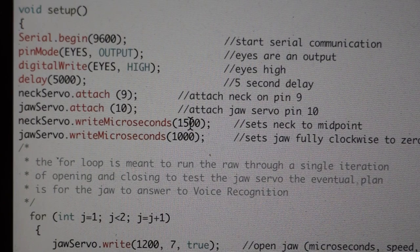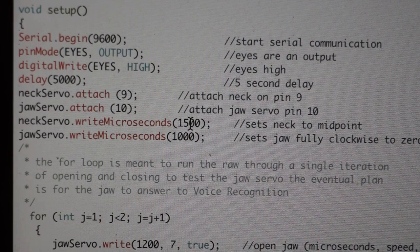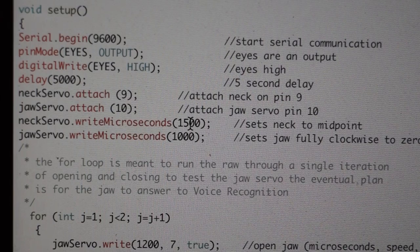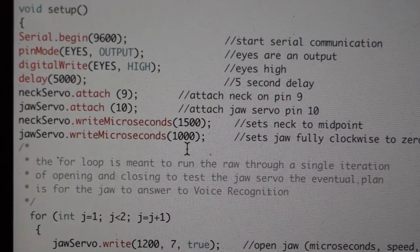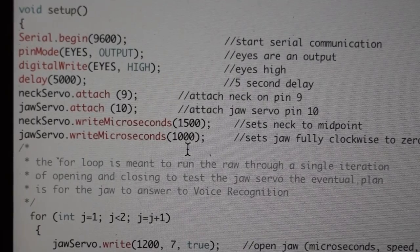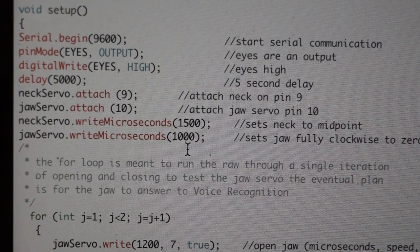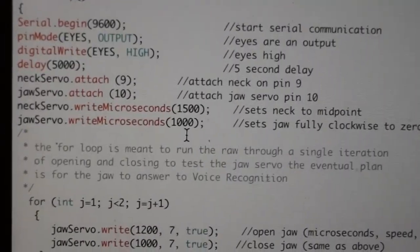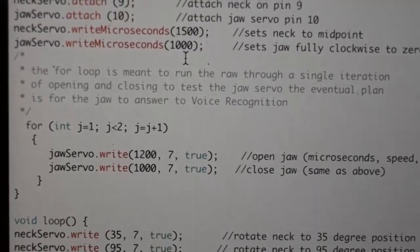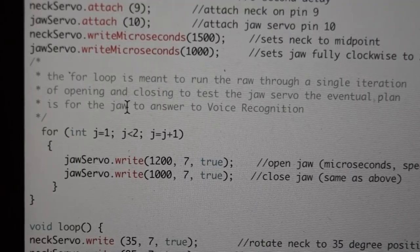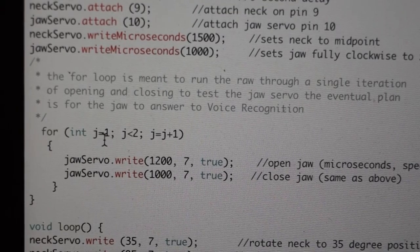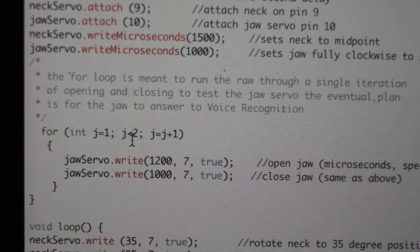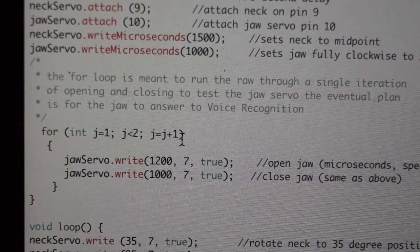What I've done is using the command write microseconds. We're writing the neck servo to 1500 milliseconds. What that is going to do is, or microseconds I should say. What that does is set the jaw, I'm sorry the head to exactly 90 degrees or as close as we can get it. The idea is that the range of motion in microseconds on these servos is between 1000 microseconds and 2000 microseconds. So 1500 microseconds puts us exactly in the middle of the range of motion. Conversely, with the jaw servo I am starting that at 1000 microseconds, meaning that it is starting in its fully closed position.